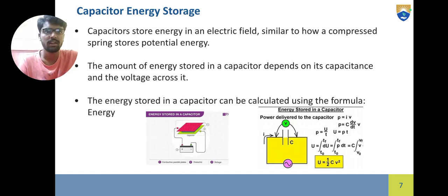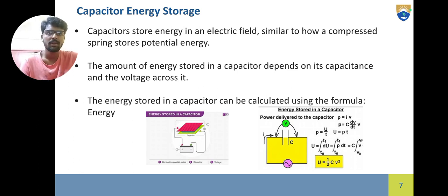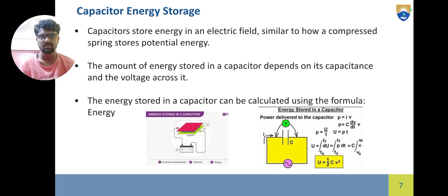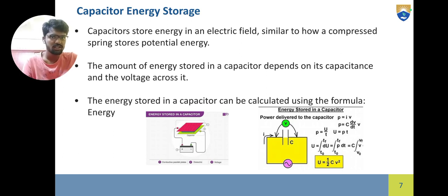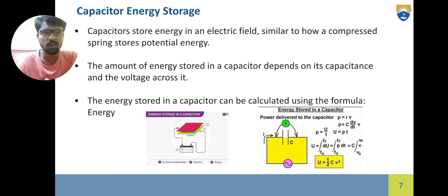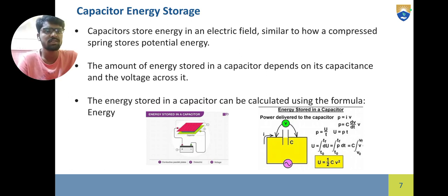Capacitors store energy in an electrical field, similar to how a compressed spring stores its potential energy. The amount of energy stored in a capacitor depends on its capacitance and the voltage across it. The energy stored in a capacitor can be calculated using the energy formula. The capacitor stores energy in an electric field — just like if you load a spring and release it, it stores potential energy and then releases it. That is the simple idea behind capacitor energy storage.